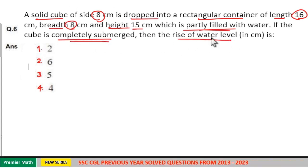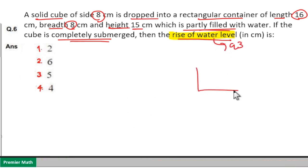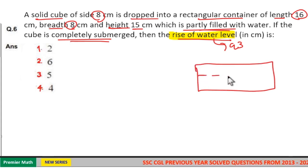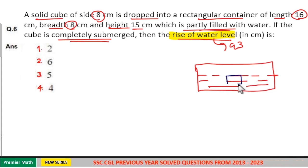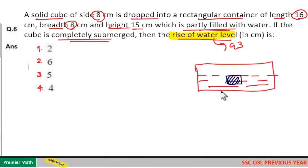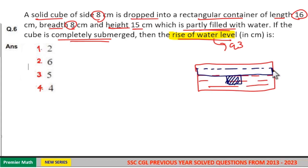The rise of water level is determined by the volume of the cube. Here is the rectangular container, partly filled with water. A cube is dropped into it and submerged, which means the volume of the cube is equal to the rise of water level — that is, the volume of the rise.